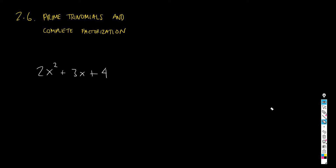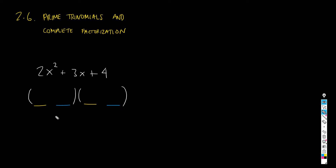The other technique is the general one: trying to find two binomials. We look for two 'yellow' terms that multiply together to give 2x squared, and two 'blue' terms that multiply to give 4, but also the cross-products — the product of these two plus the product of these two — should give you 3x. And that's not always possible.